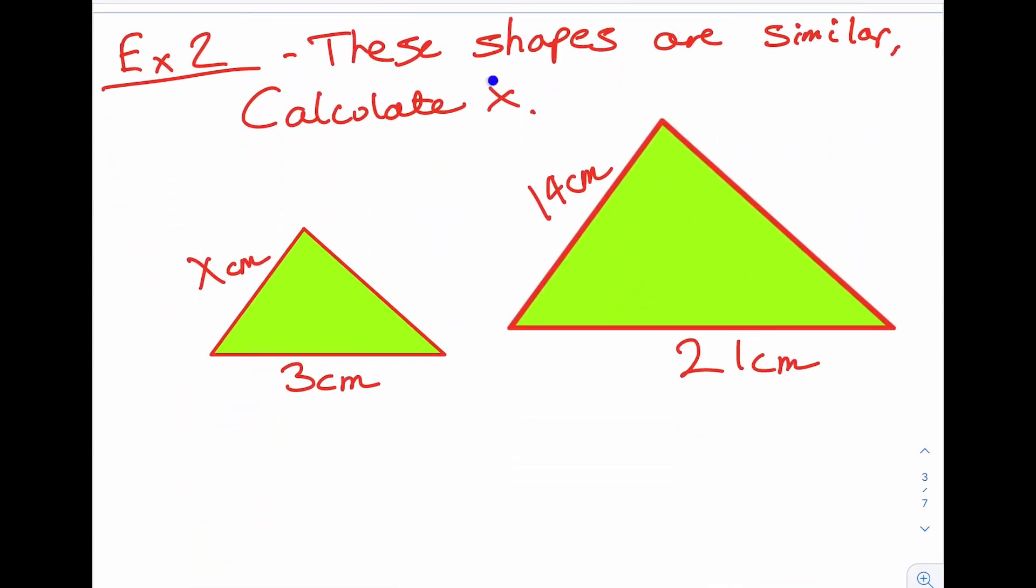Example 2. These shapes are similar. Calculate X. So this time we're using triangles, but it doesn't matter. So the first thing we do is to check where is our missing side. It's in the small triangle. So I'm looking for,